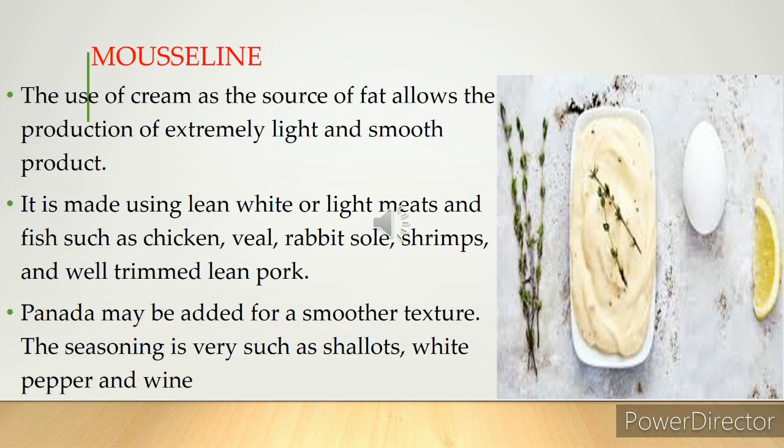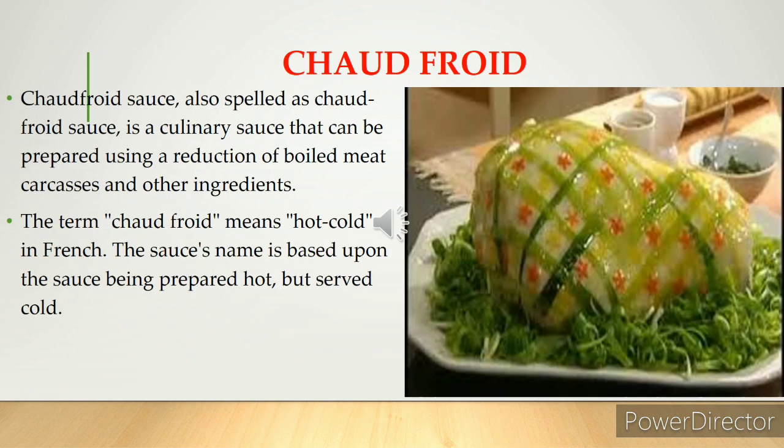Mousseline is made from a combination of uncooked meat that is pureed, bound with egg white, and sometimes cream, and set by cooking. Normally the force meat for a mousseline is made from fish — raw fish processed with egg white to a fine paste. Seasoning and a little cream can be incorporated towards the end. The mixture may be flavored with herbs like dill and parsley. Mousseline can be served hot or chilled.